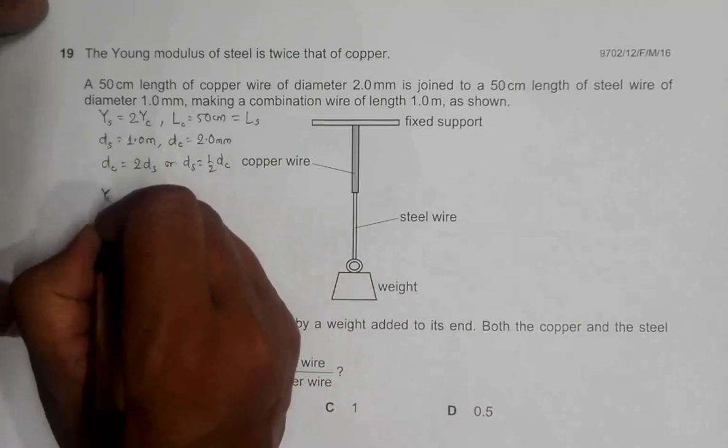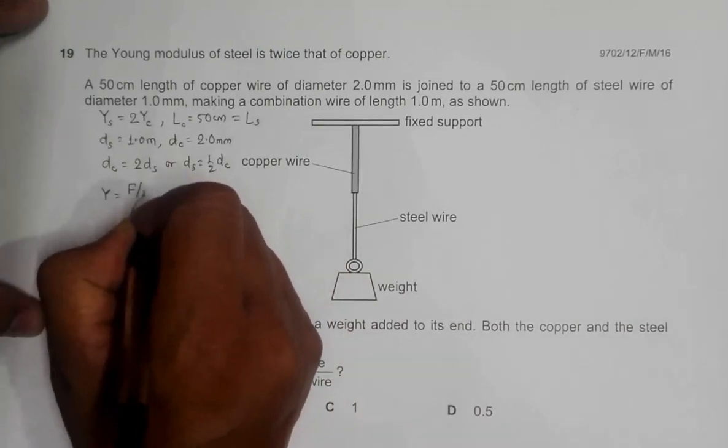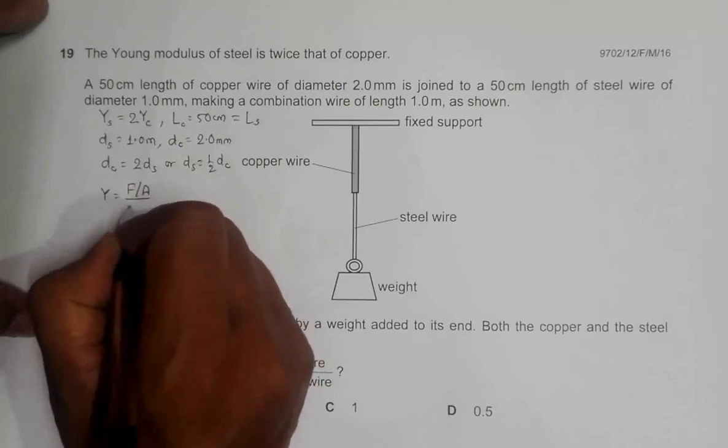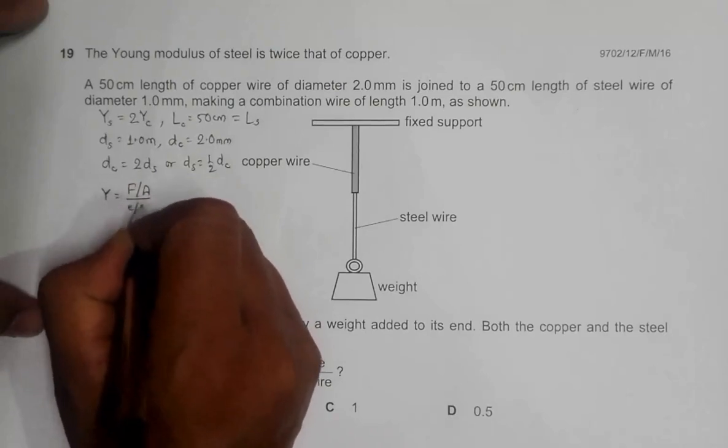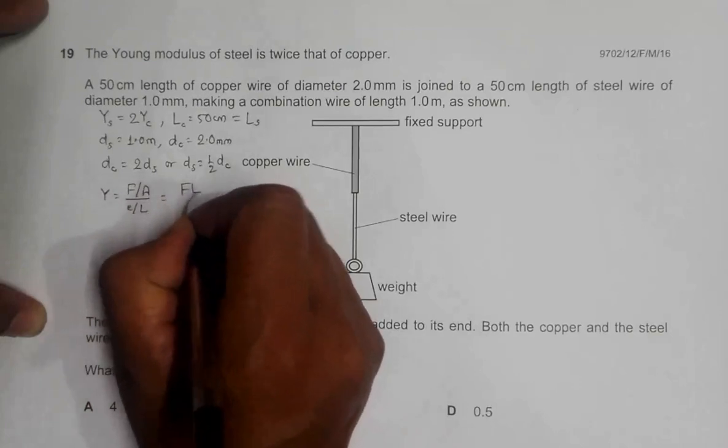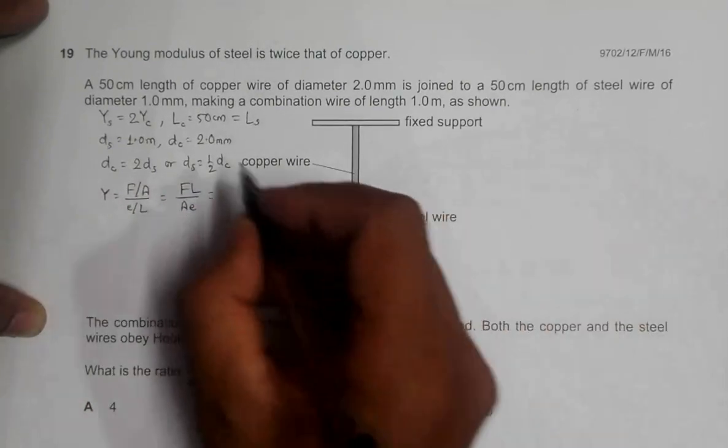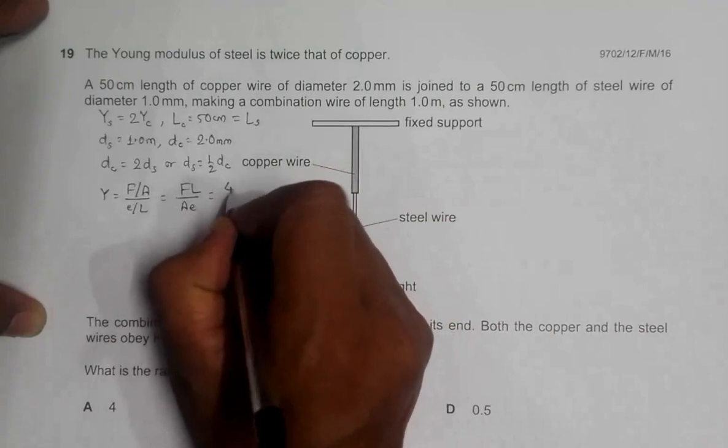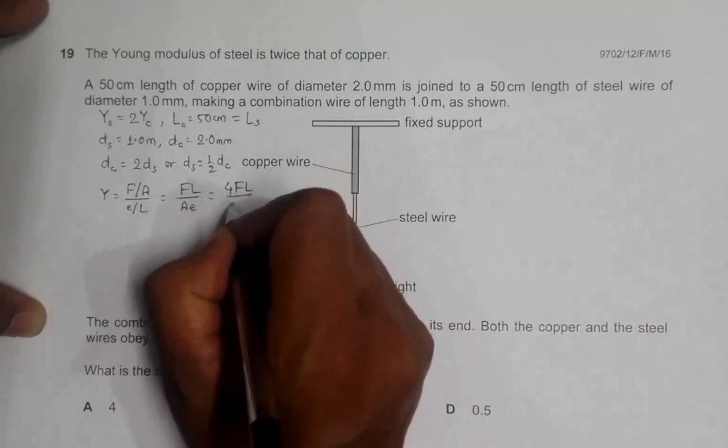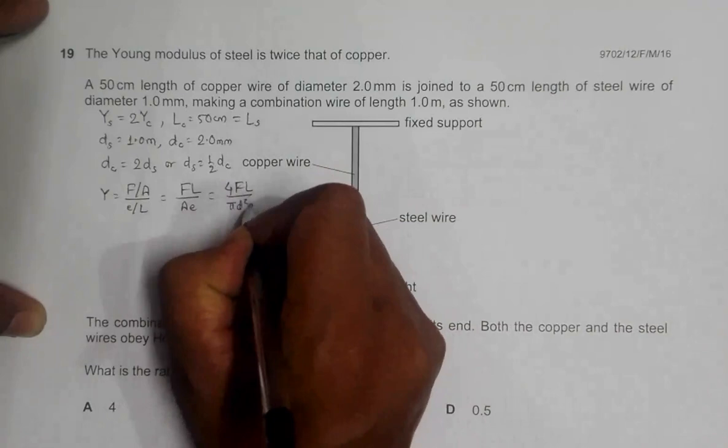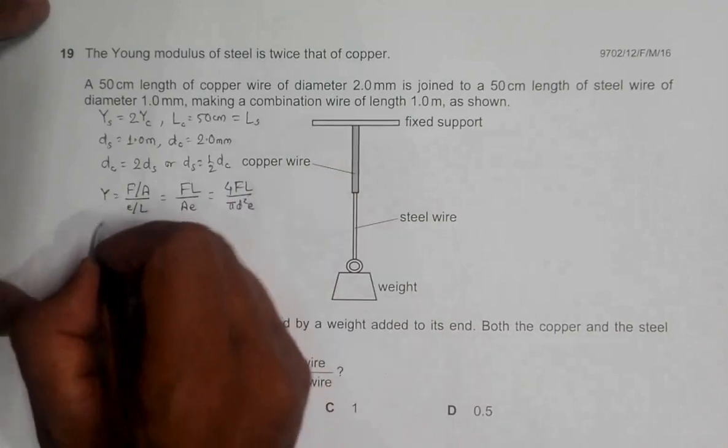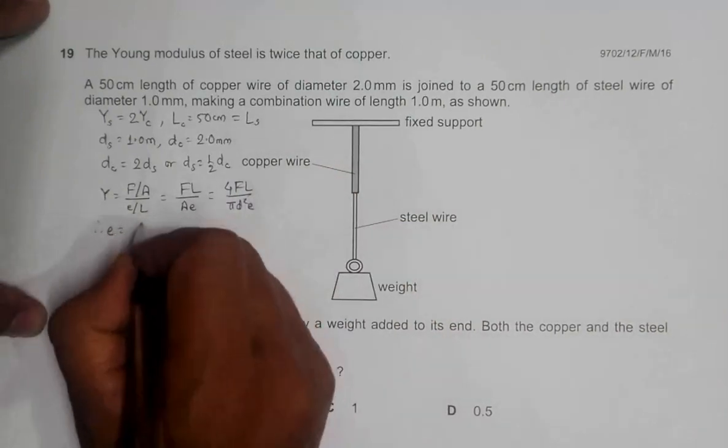Let me first write the expression for Young's modulus. Young's modulus is equal to F by A divided by extension by original length, equal to FL by Ae. Since A is equal to pi d square by 4, it should be equal to 4FL by pi d square e.